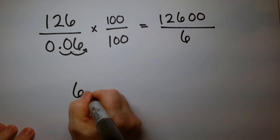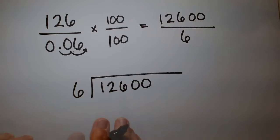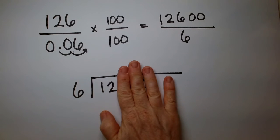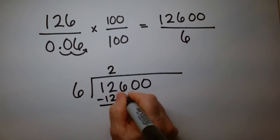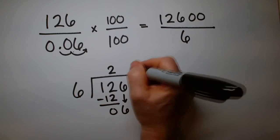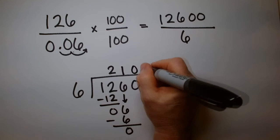6 goes into 12600. 6 doesn't go into 1, but it goes into 12 two times, and it goes in evenly. There's no leftover. Drop the 6. 6 goes into 6 one time, and there's nothing left over. And these are just zeros.